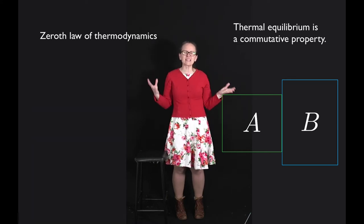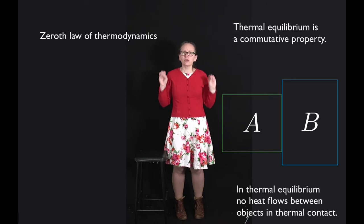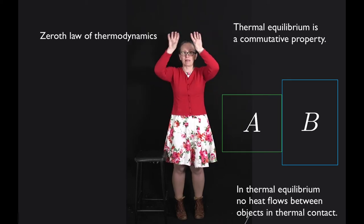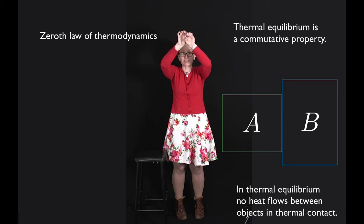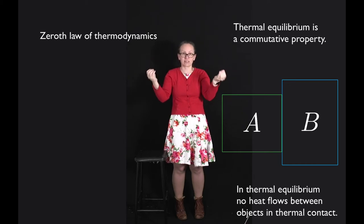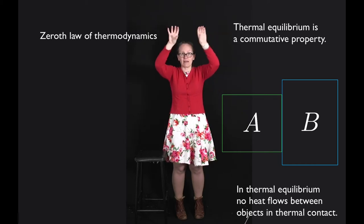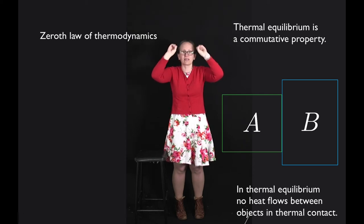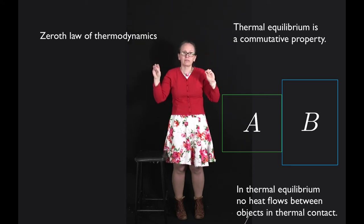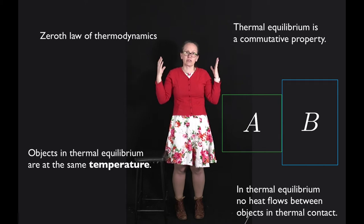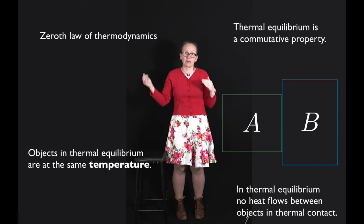But what is thermal equilibrium? Two objects are in thermal equilibrium with each other if, when they're placed in thermal contact — placed next to each other so that heat can flow between them — no heat actually does flow between them. When we have them in thermal contact and no heat is flowing, they are in thermal equilibrium. Two objects which are in thermal equilibrium are said to be at the same temperature.